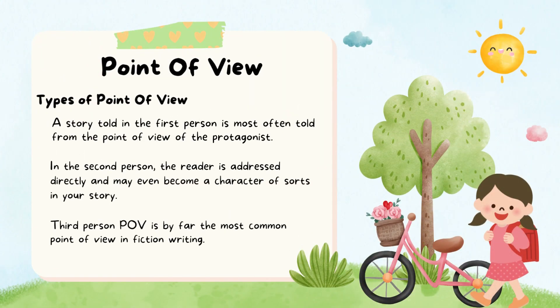Point of View — Types of Point of View: The story told in the first person is most often told from the point of view of the protagonist. In the second person, the reader is addressed directly and may even become a character of sorts in your story. Third person point of view is by far the most common point of view in fiction writing.